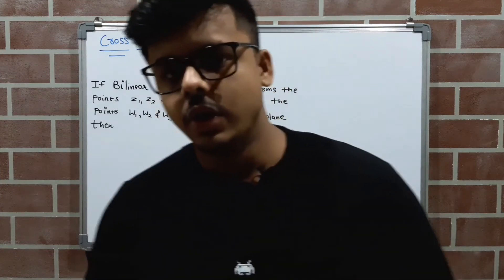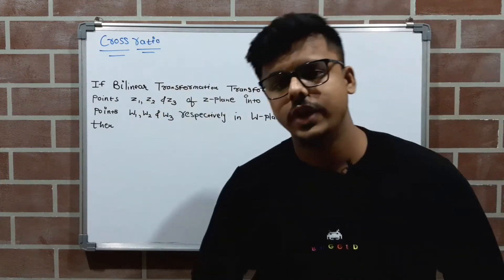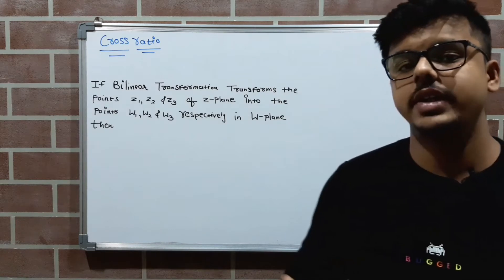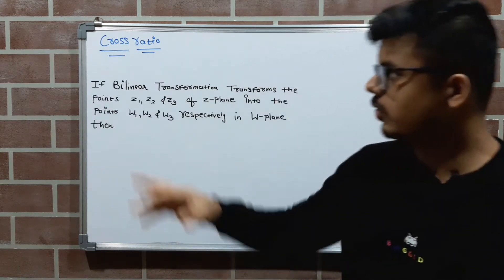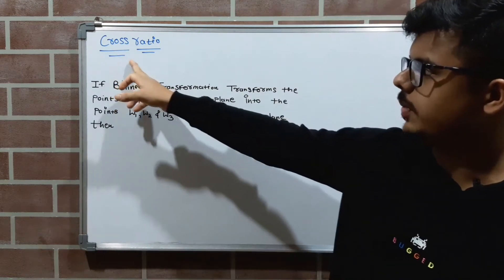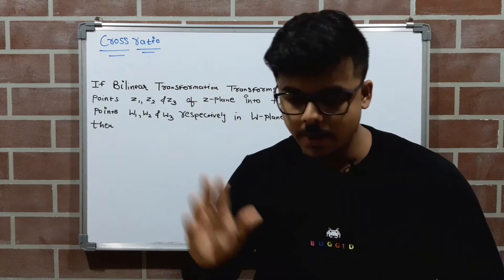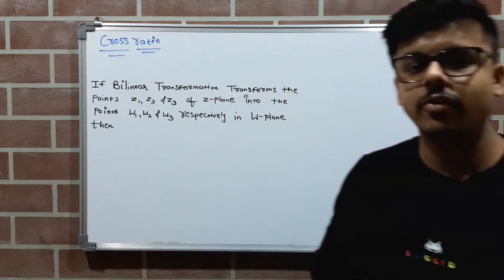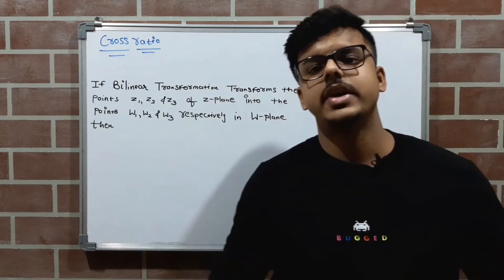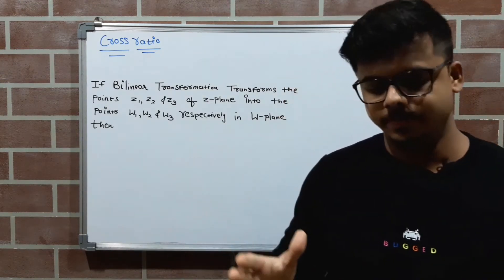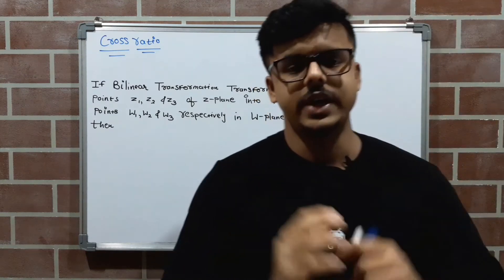This is the extended topic of the bilinear transformation, or we can say Möbius transformation. The topic is the cross ratio. Before understanding what the cross ratio is, we will frame a situation — so pay attention.